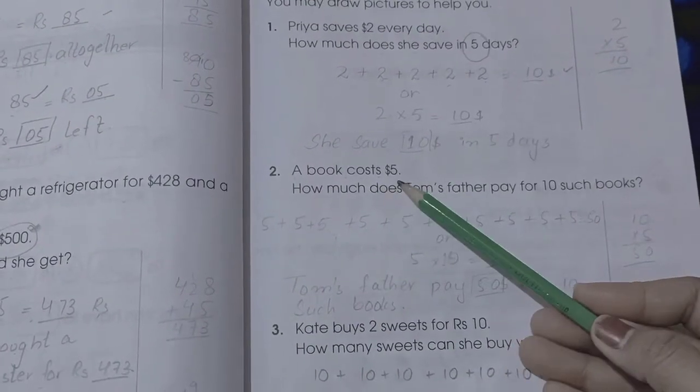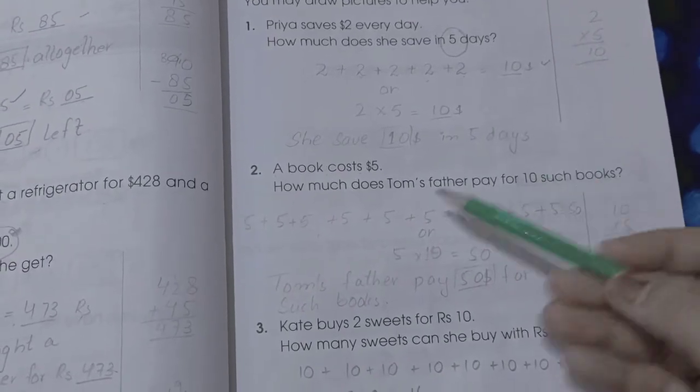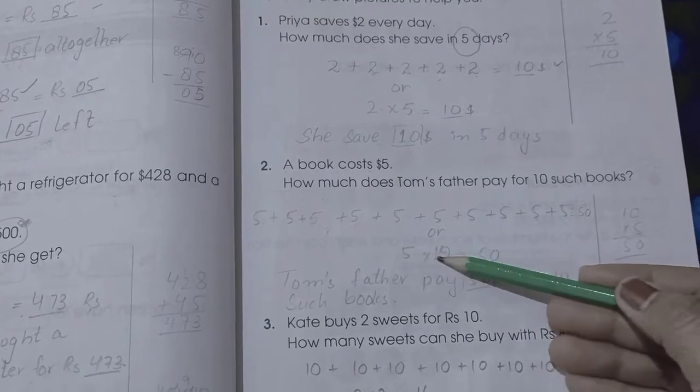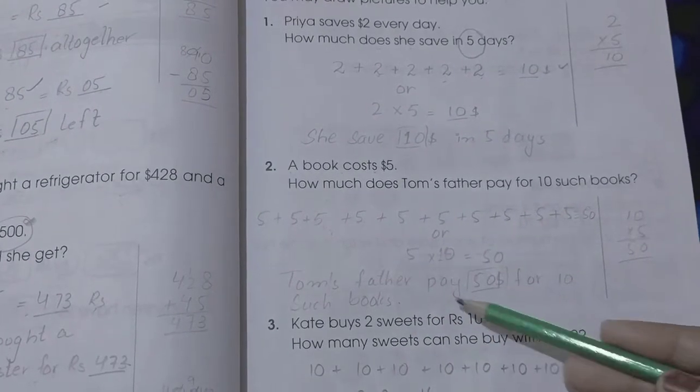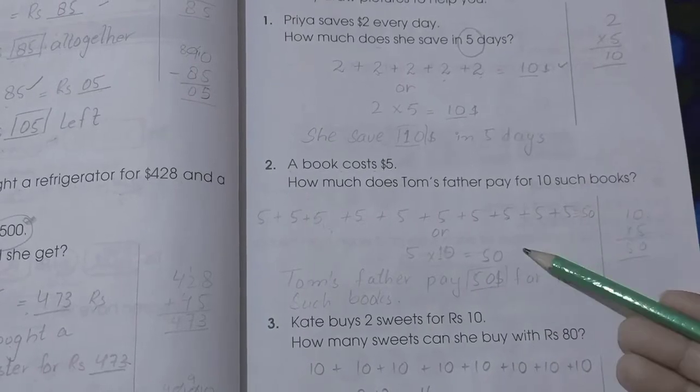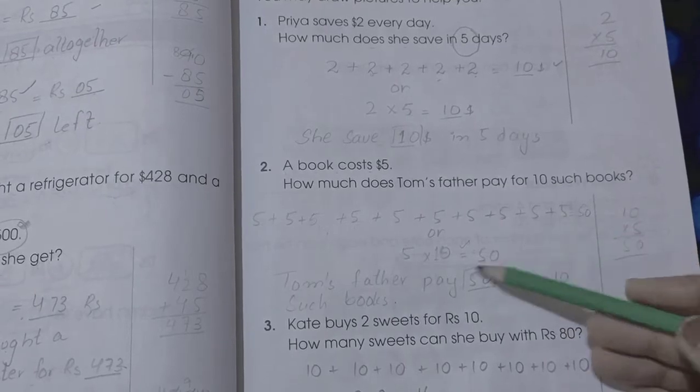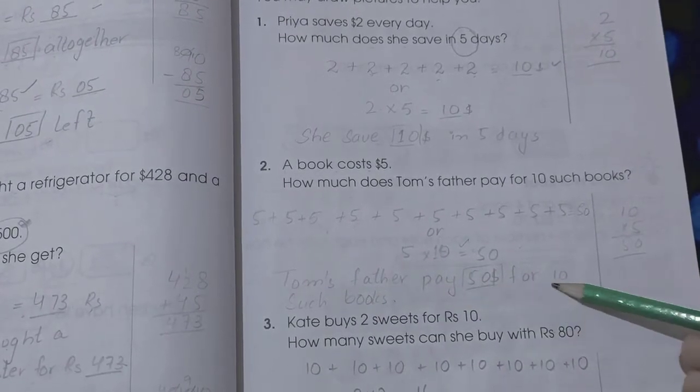A book costs $5. How much does Tom's father pay for ten such books? We simply multiply 5 by 10, or we can add 5 ten times. The answer will remain the same, but multiplication is the easiest and fastest method. Five tens are fifty. Tom's father pays $50 for ten such books.